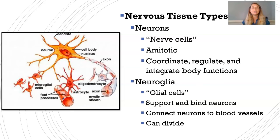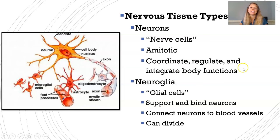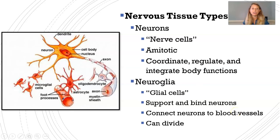Neurons are the specialized cells of the nervous system — really what the nervous system is all about. Glial cells are there to support the neurons, so when people say 'nerve cells,' they mean neurons. Neurons are amitotic, meaning they don't regenerate within your lifetime, which is why it's important not to kill off brain cells. Their job is to coordinate, regulate, and integrate body functions. Glial cells support neurons by binding them to vessels and to each other — they can divide, which is why brain cancer typically originates from glial cells.